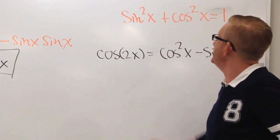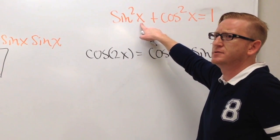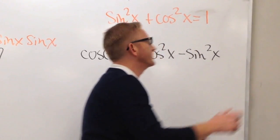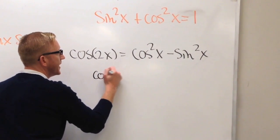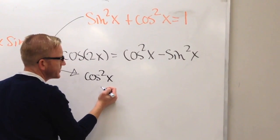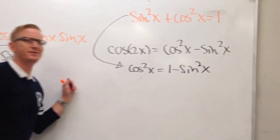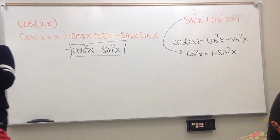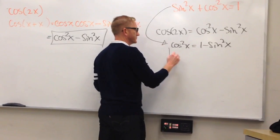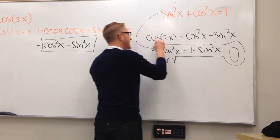Now we want to create the other two, and we're going to use our Pythagorean identity. We'll solve it for cosine. The cosine squared x is equal to 1 minus the sine squared x — we subtract sine squared from both sides. That result is going to be key.